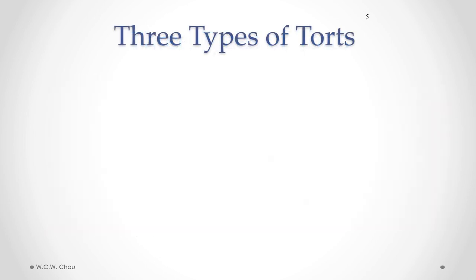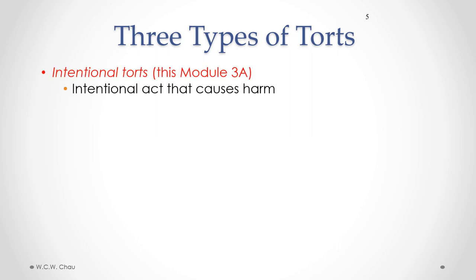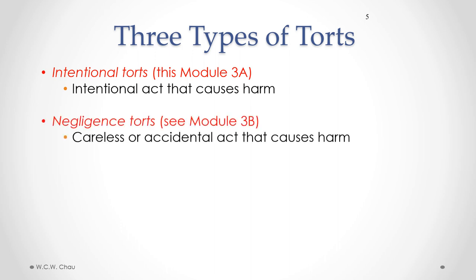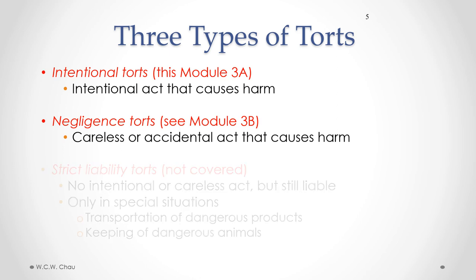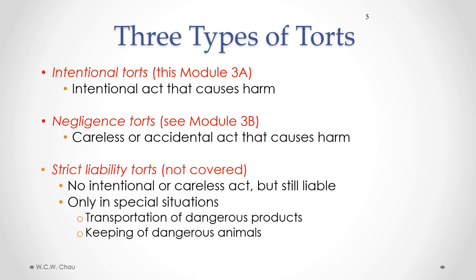There are three types of torts. The first type is intentional torts, covered in Module 4A. An intentional tort involves an act done intentionally that causes harm to someone else. Negligence torts, covered in Module 4B, involve an act done carelessly or accidentally that causes harm to someone else.